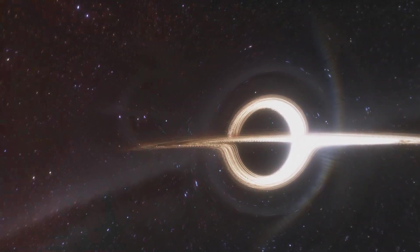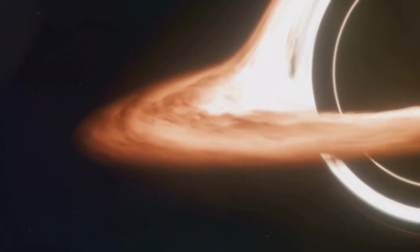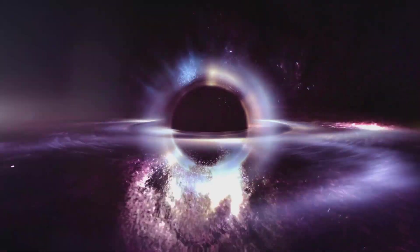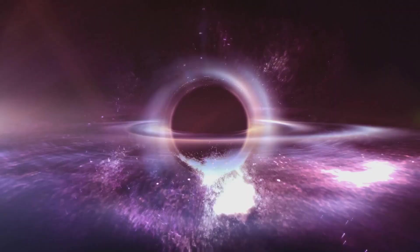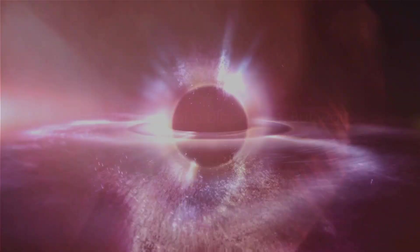But what if the star is even more massive? The gravity becomes so strong that not even the pressure of the neutrons can withstand it. The core continues to collapse, shrinking beyond our ability to comprehend. It becomes a point of infinite density, a singularity.